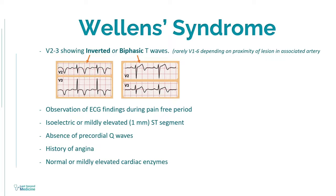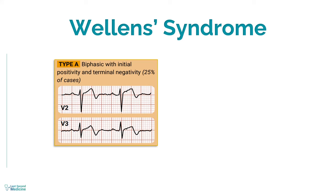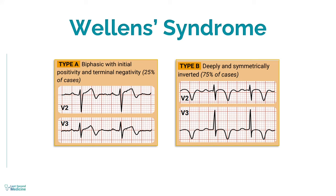Wellens syndrome has two different types of T wave morphologies seen during the painless period. Based on these different patterns, Wellens syndrome is divided into type A and type B. Type A is found in 25% of cases while type B is in 75%. In type A, there are biphasic T waves typically observed in V2 and V3, as was the case presented in the beginning. While in type B, there are deep negative T waves in leads V2 and V3.